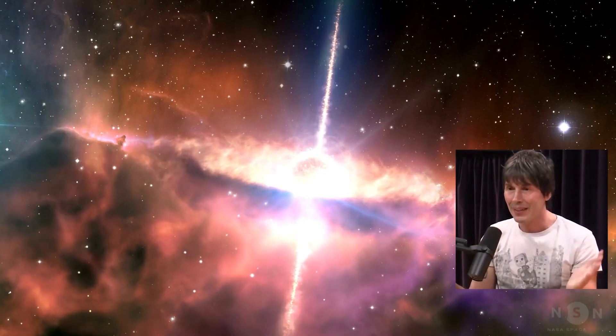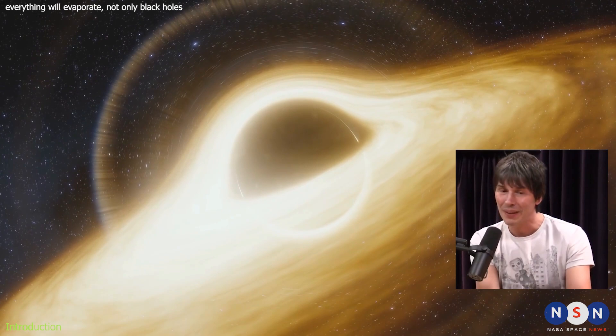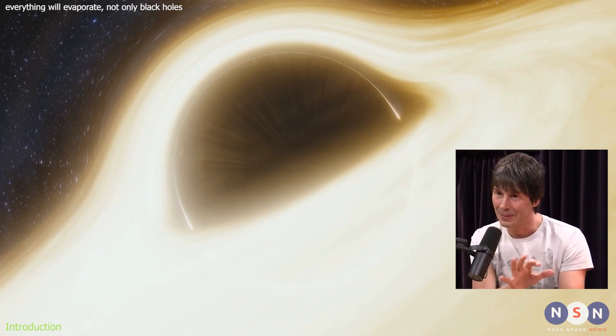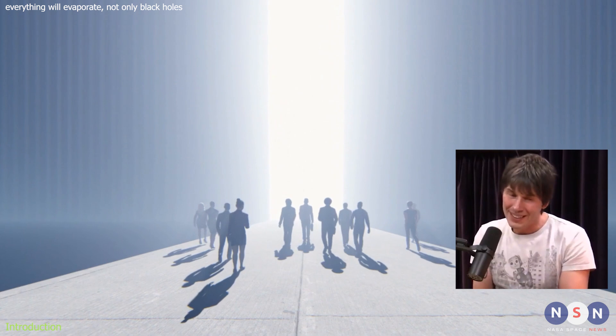They're surrounded by this region where if you fall in, it's called the event horizon. If you go across that horizon, then you are going to the center. There's one way of thinking about it which is quite cool, which is that time and space sort of flip. In the same way that we are going into the future now, we are going to tomorrow and there's nothing we can do about it.